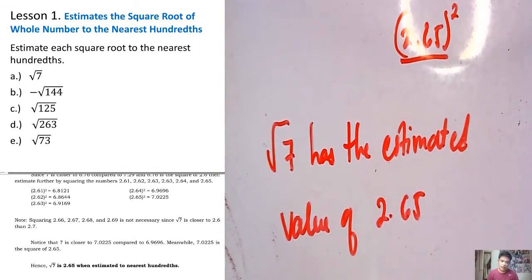That ends our example letter A for square root of 7. Now for examples B, C, D, and E, the process is just the same. You just identify the values which are closer to the given number and those values should be perfect squares. Then you decide which one is closer, and make a final conclusion for the next hundredth place of that value. This ends our lesson. I hope you were able to be clarified about this lesson. Thank you.